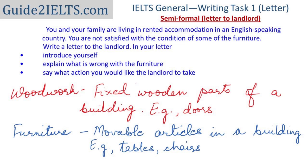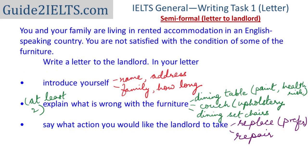One common mistake is confusing the word furniture with woodwork. Woodwork refers to fixed items like windows, doors, and cupboards made of wood. Furniture, on the other hand, refers to movable items — chairs, tables, sofas, beds — which can be made of wood or other materials. So if you write that a door doesn't close properly, that would be incorrect, as a door is not part of the furniture.